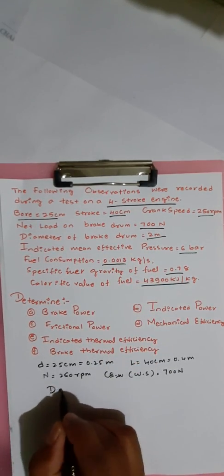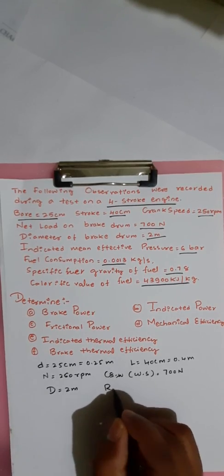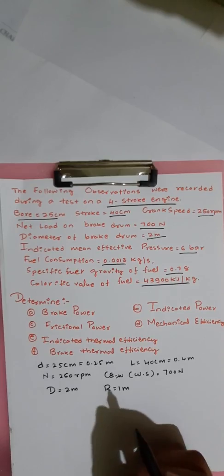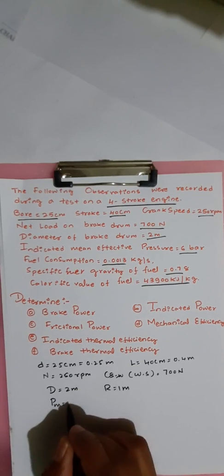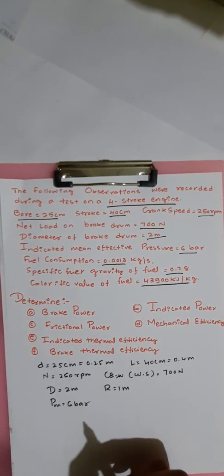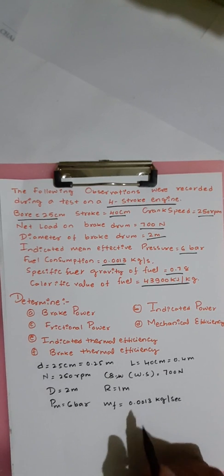The diameter of the brake drum capital D is equal to 2 meter, so the radius R is equal to 1 meter. The mean effective pressure Pm is equal to 6 bar. The fuel consumption mf is equal to 0.0013 kg per second.